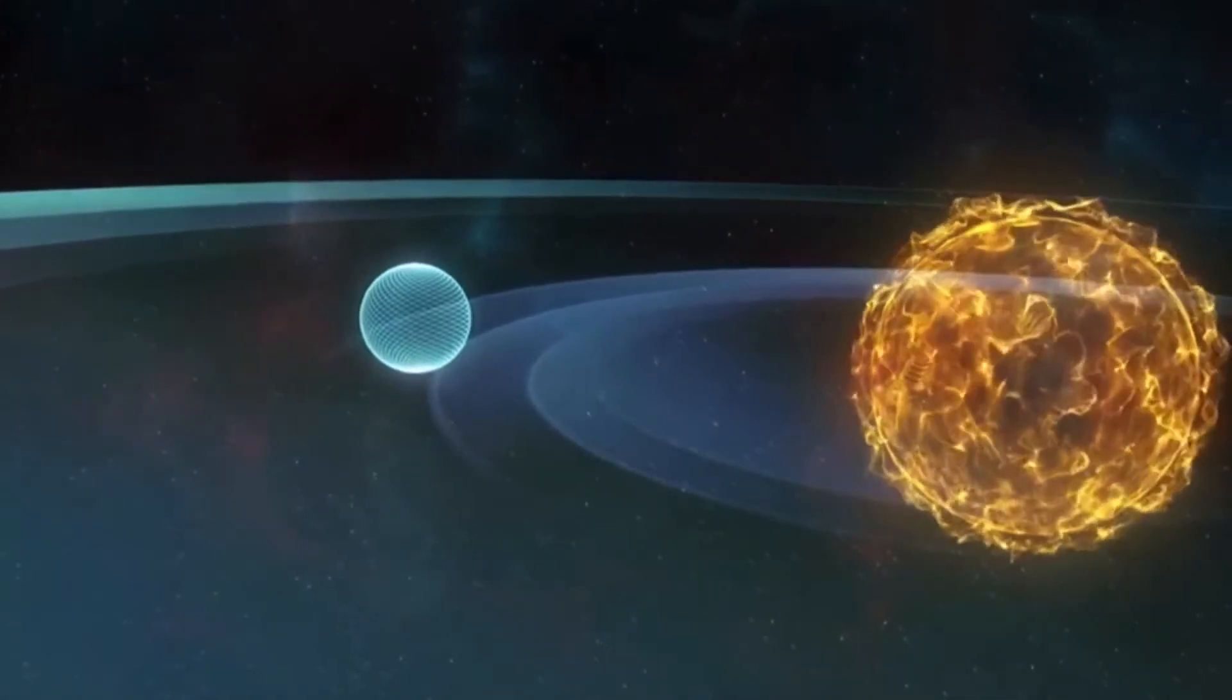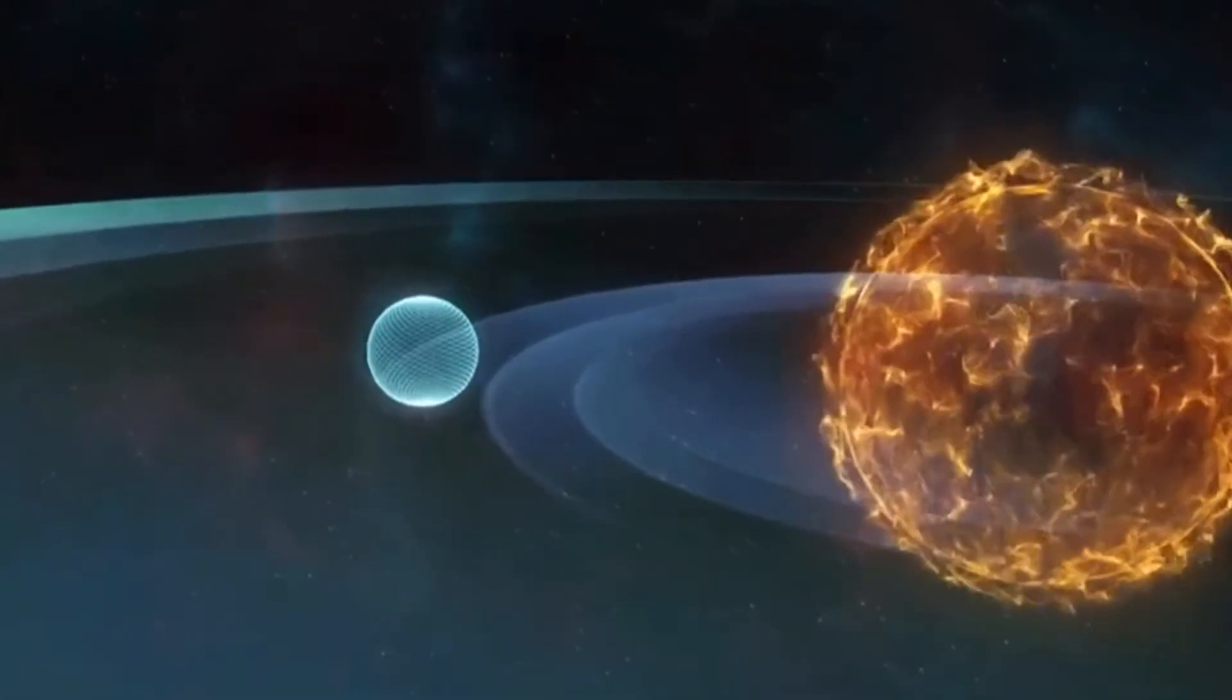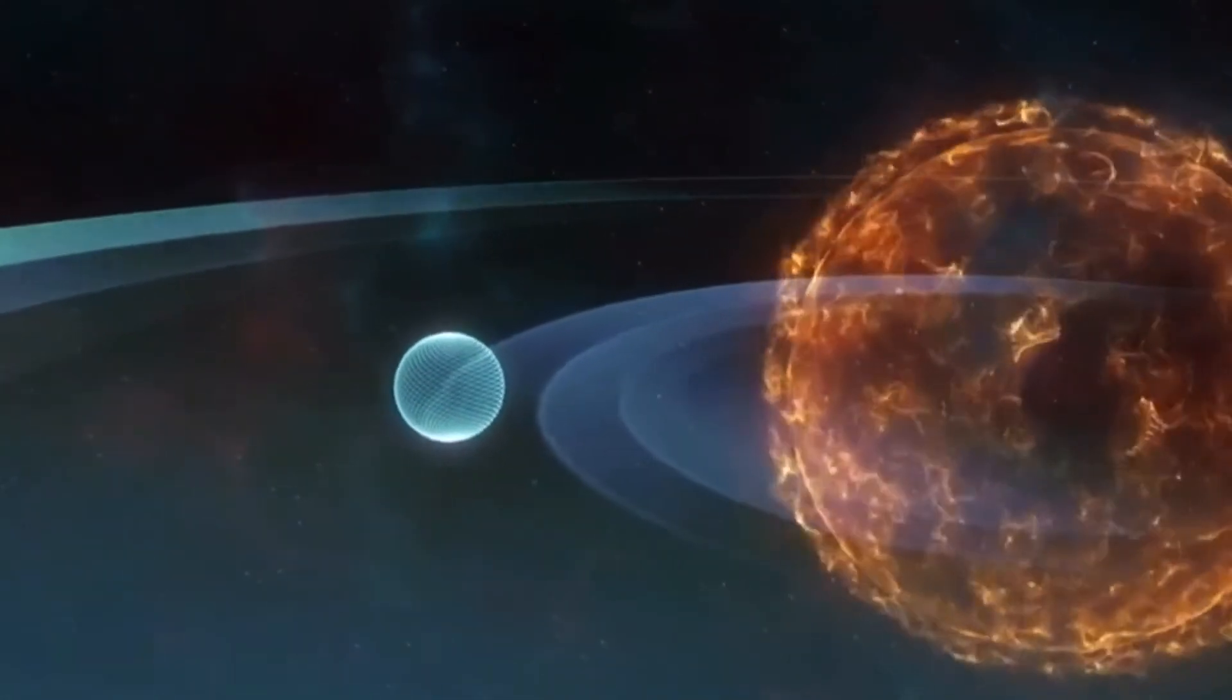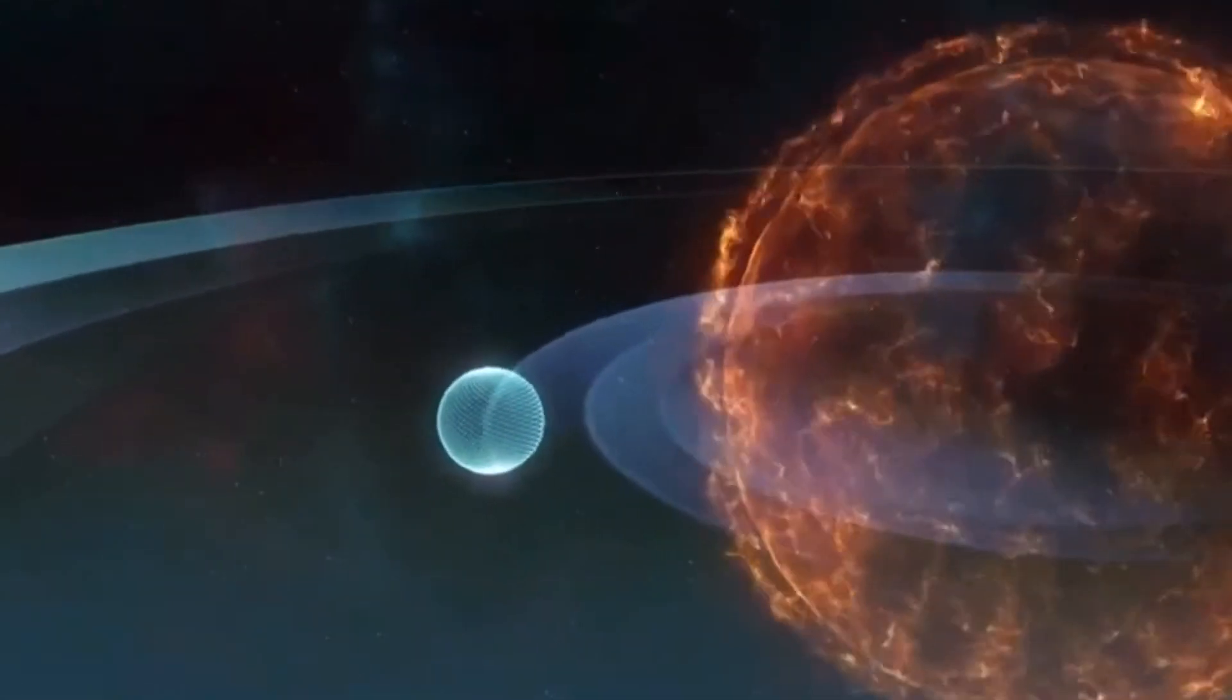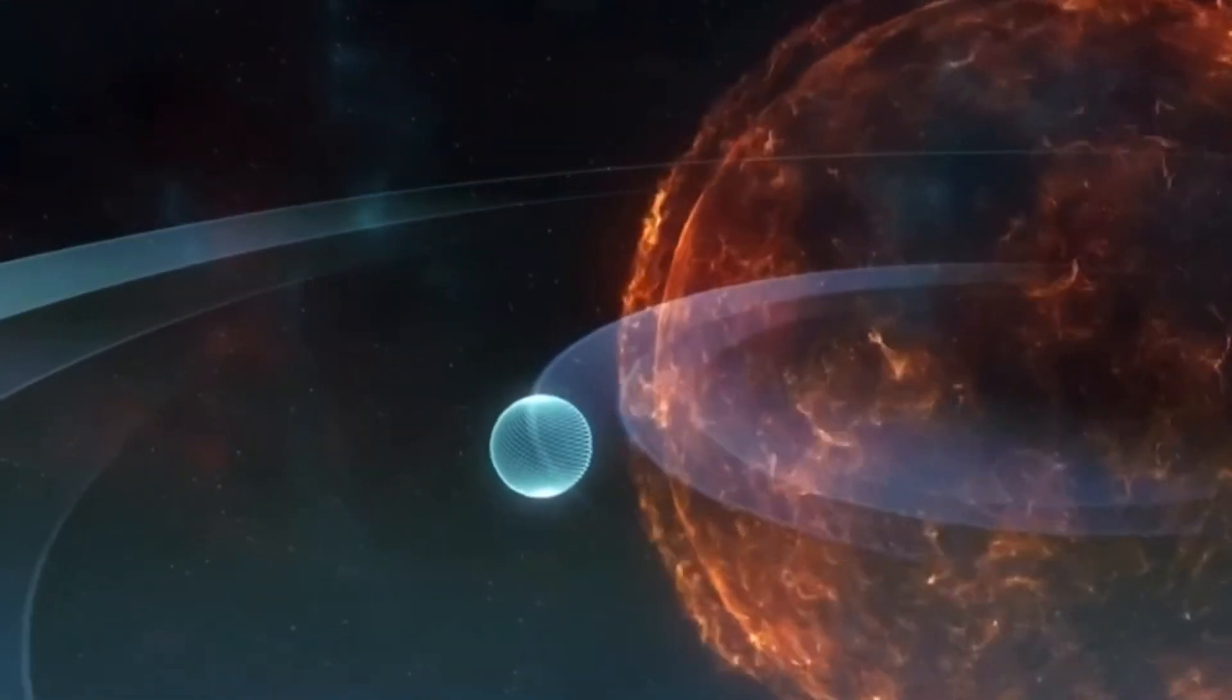In about five to six billion years, the Sun will eat all of the inner planets of our solar system and will reach the Earth's orbit, thus entering the Red Giant phase.